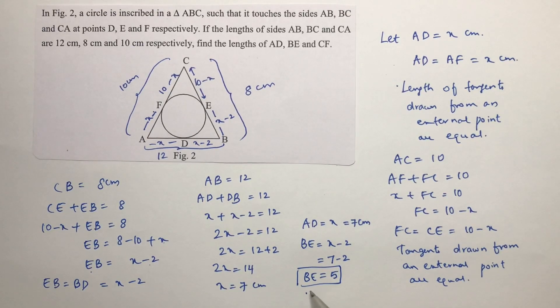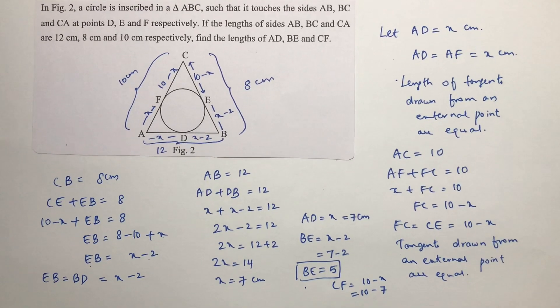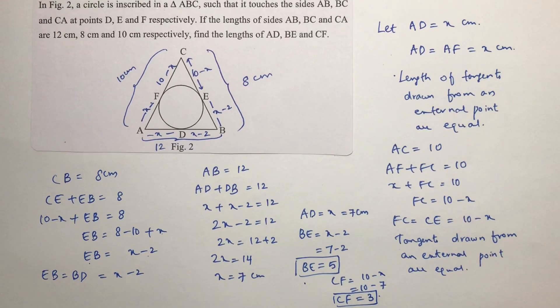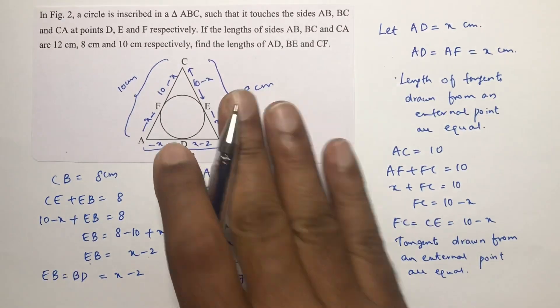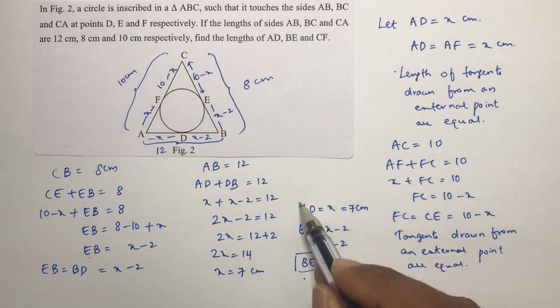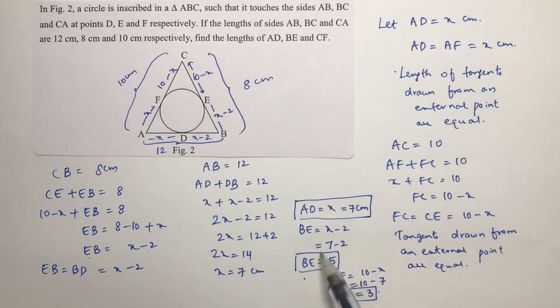Next we need CF. We need the value of CF. So here I will write CF is nothing but 10 minus x, so 10 minus 7, so 10 minus 7 is 3. So CF is 3. So the values are AD is 7, BE is 5, CF is 3 centimeters.